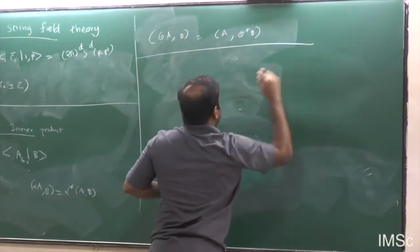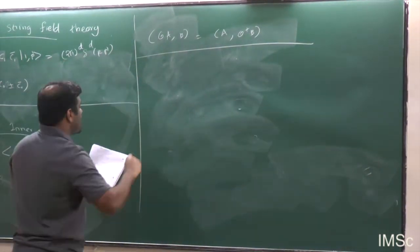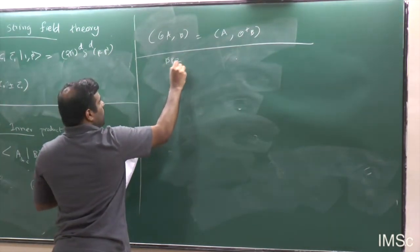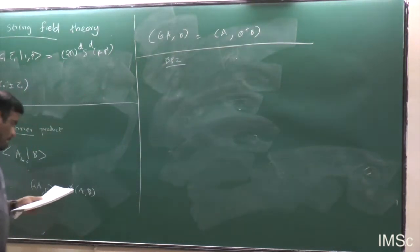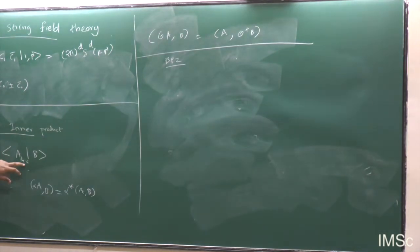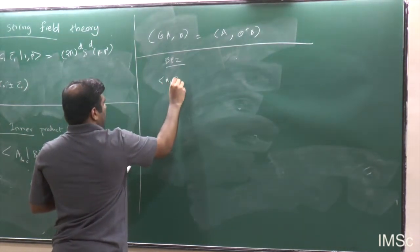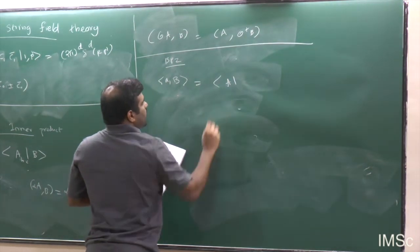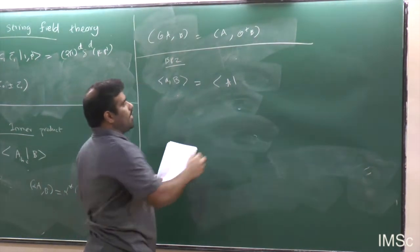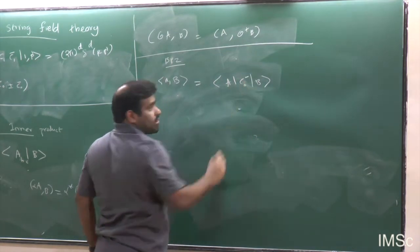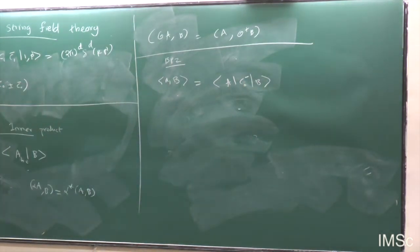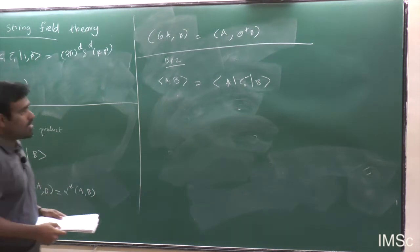The other important inner product is the BPC inner product. The difference here is that we do not take the Hermitian conjugation. You just take states A and B and compute the inner product with a C_0^− inserted in between. These are the two inner products useful for our construction.